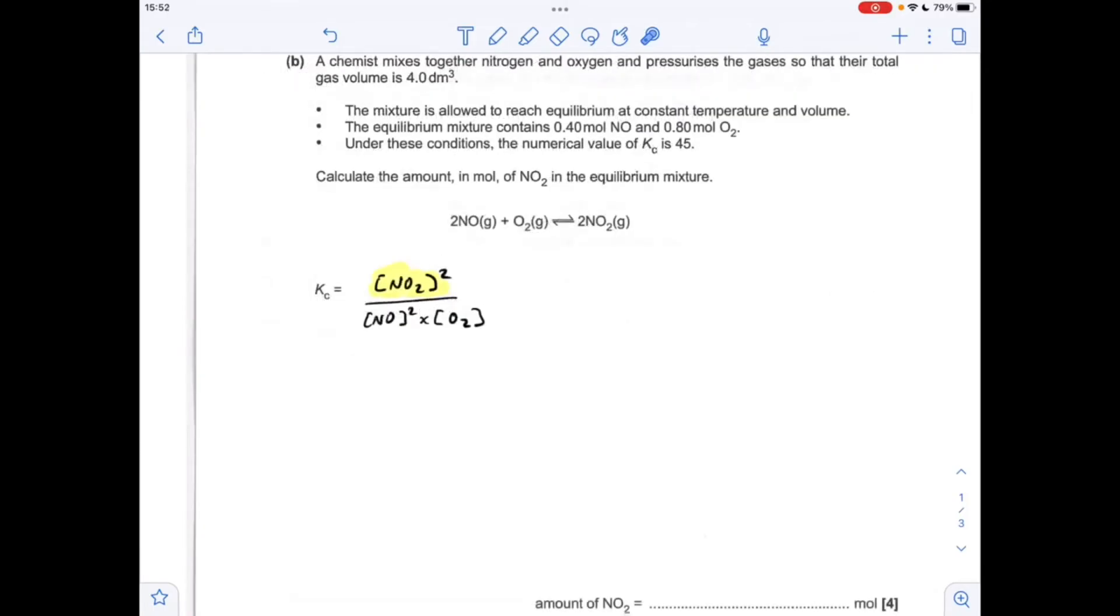So moving on to part B, we've got to calculate the amount in moles of NO2 in the mixture. Well, we can use the KC expression to calculate the concentration of NO2 and then we can factor in the volume and turn the concentration into moles.